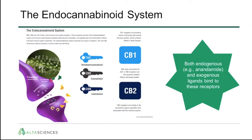To give a general overview of the cannabinoid system, it is composed of various receptors, primarily CB1 and CB2. CB1 receptors are found primarily in the brain and central nervous system, and to a lesser extent in the periphery, whereas CB2 receptors are mostly in the peripheral organs, especially cells associated with the immune system. THC, cannabidiol, and cannabinol bind to such receptors to exert their effect. There are both endogenous chemicals found within the body and exogenous ligands — things from outside the living system — that bind to these receptors and exert an effect in our bodies.